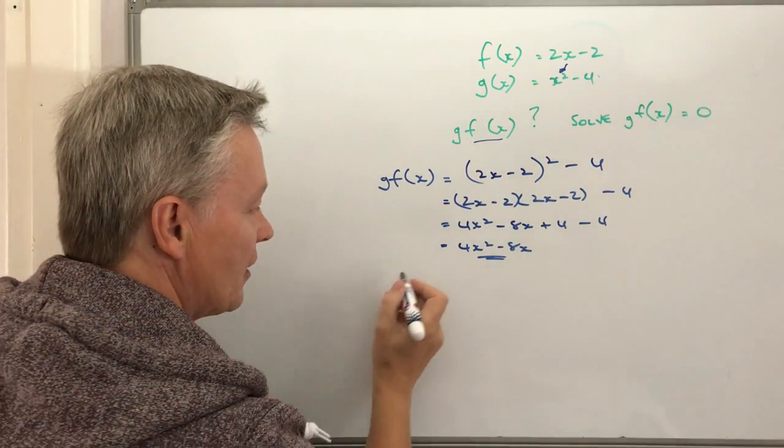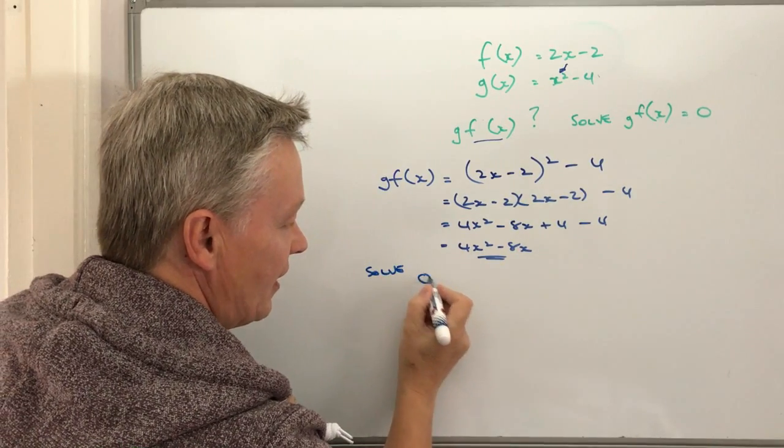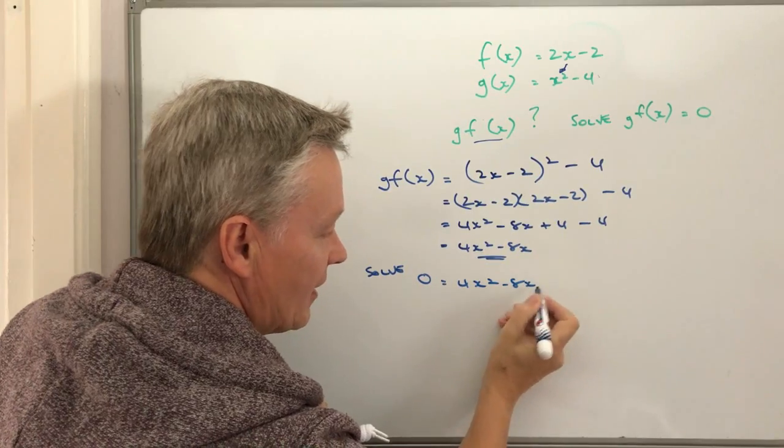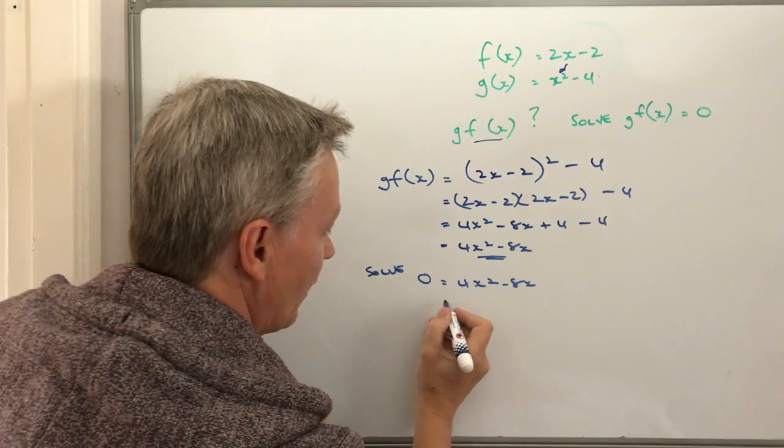Okay, so to solve it, it's when, so if we're going to solve it, it's when 0 equals 4x squared minus 8x.